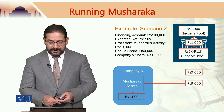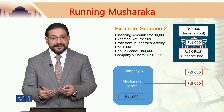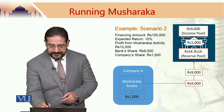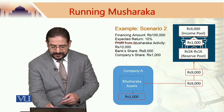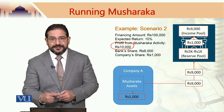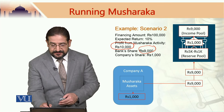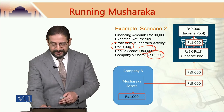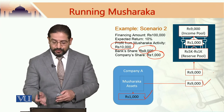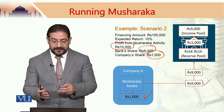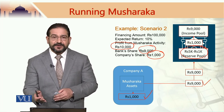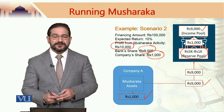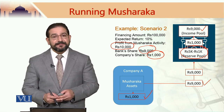In case of a loss, or in case of a return which is less than the expected rate of return of 10 percent, if the profit from the Musharraka activity was only 10,000, the bank's share would be 9,000 (90 percent) and the company's share would be 1,000. The company would retain 1,000, and the bank, looking for 10,000, would draw the remaining 1,000 from the reserve pool to make its total profit of 10,000, which represents the 10 percent return the bank was looking for.